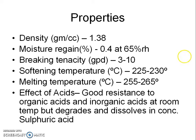Some of the important properties of polyester are: density 1.38 g/cc, moisture regain 0.4% at 65% RH, breaking tenacity 3–10 grams per denier, softening temperature 225–230°C, and melting temperature 255–265°C. Polyester has good resistance to organic acids and inorganic acids at room temperature, but degrades and dissolves in concentrated sulfuric acid. This is used as one of the identification methods for polyester.